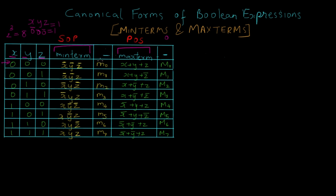Min terms are denoted by small m and their position — so this is value at position 0, or the 0th row. That is the reason why we say there is m0, and the associated x, y, z variables with their values corresponding to 0, 0, 0. Similarly, max terms are denoted by capital M with the corresponding value, that is 0 in this case, since at the 0th position we have all x, y, z values as 0.